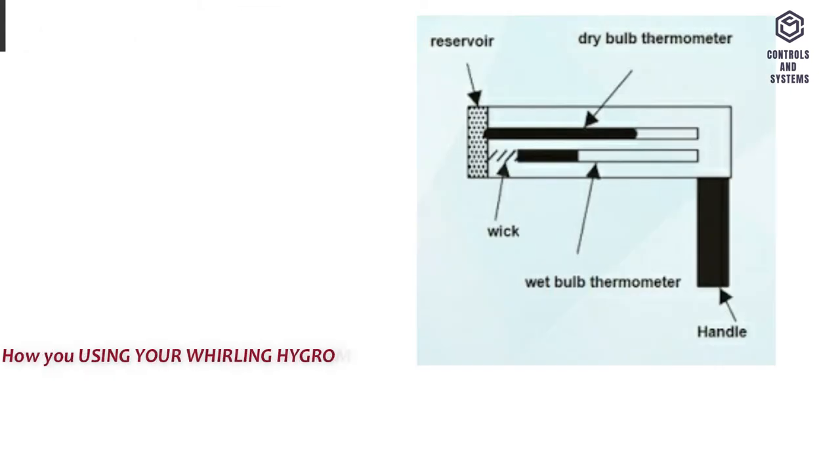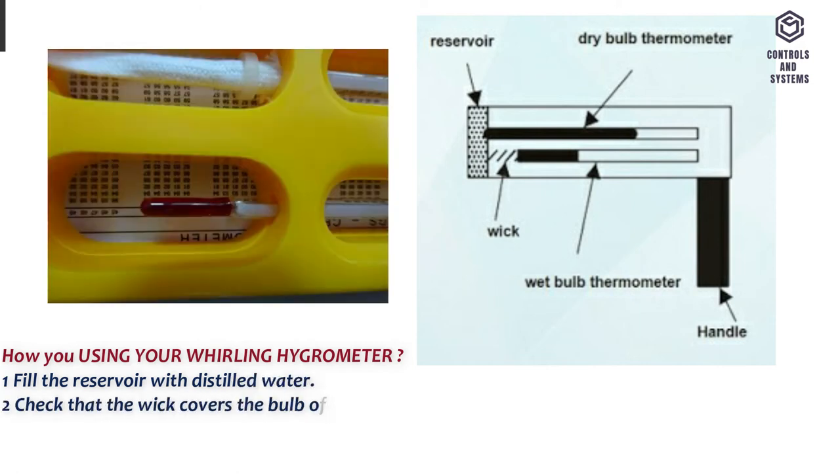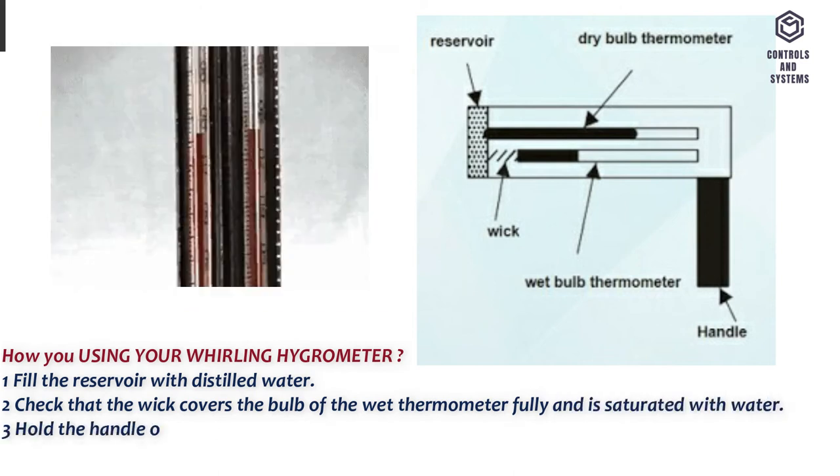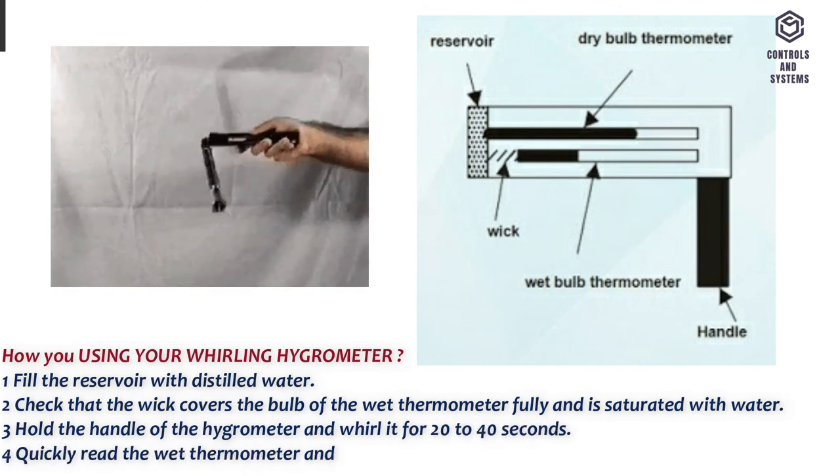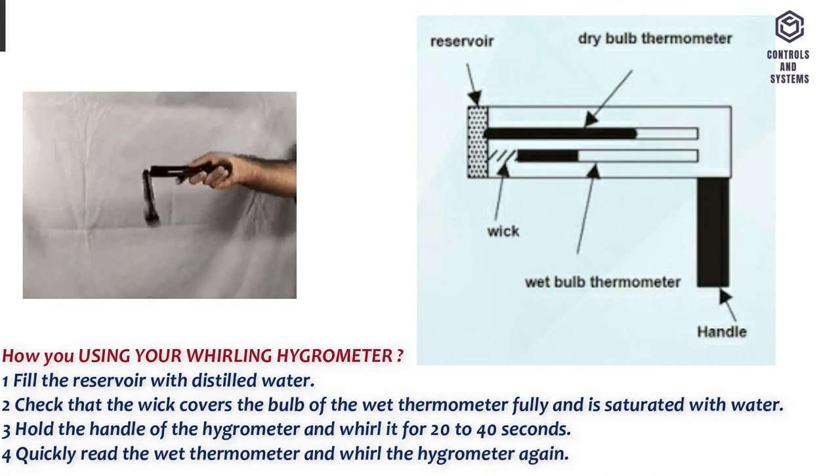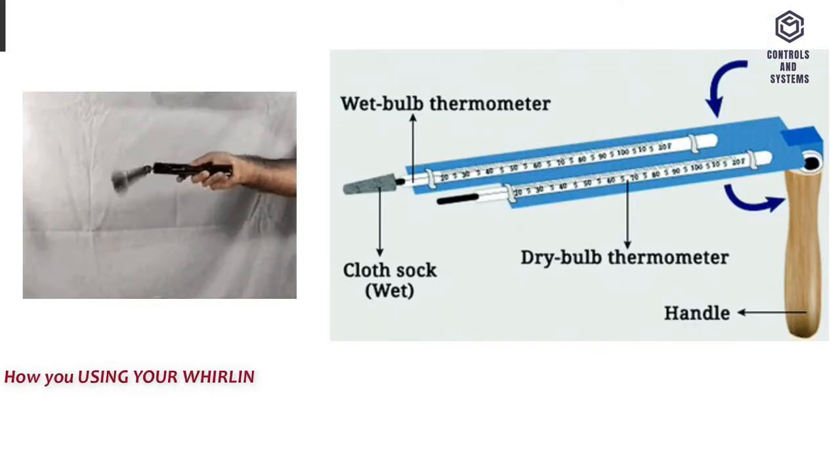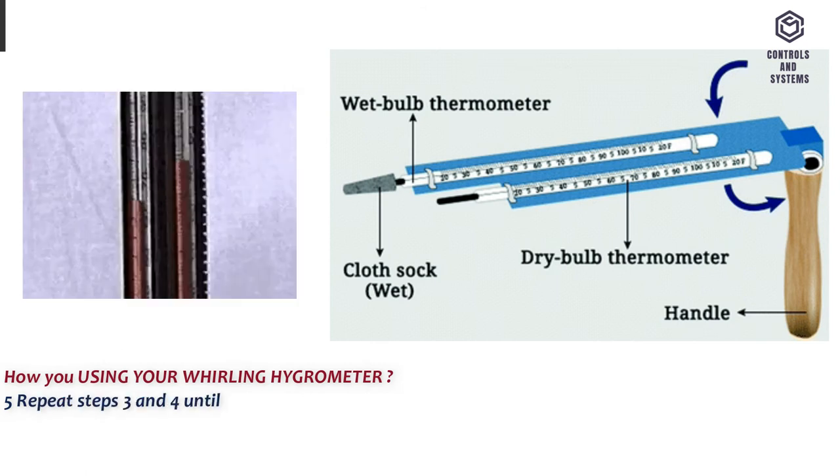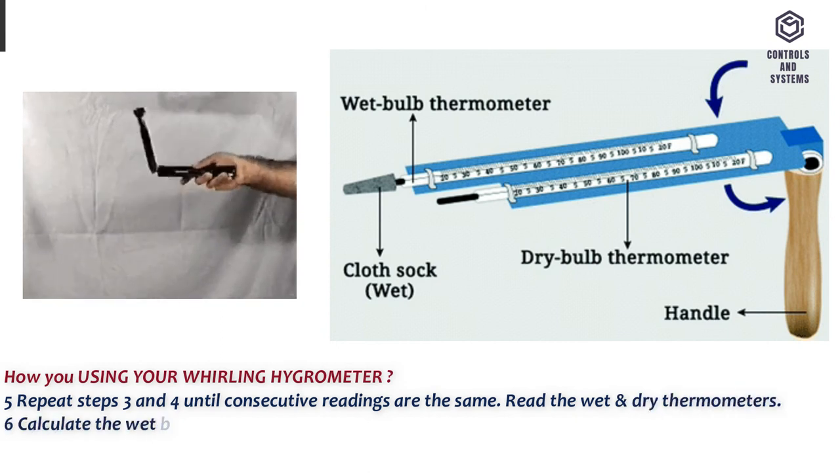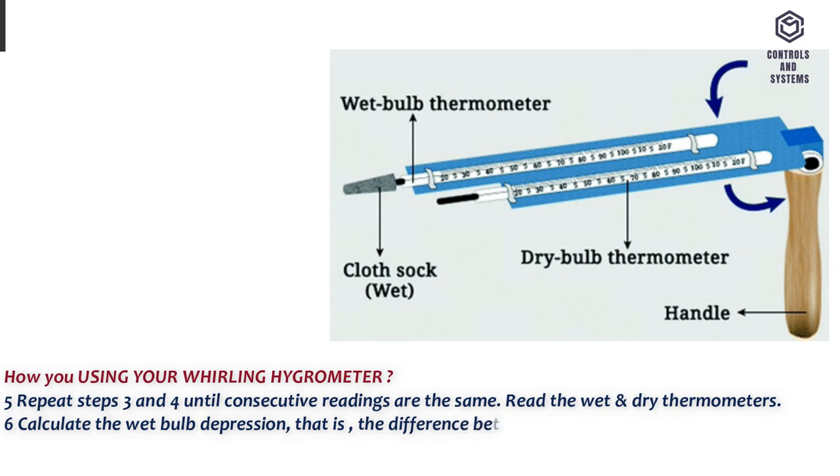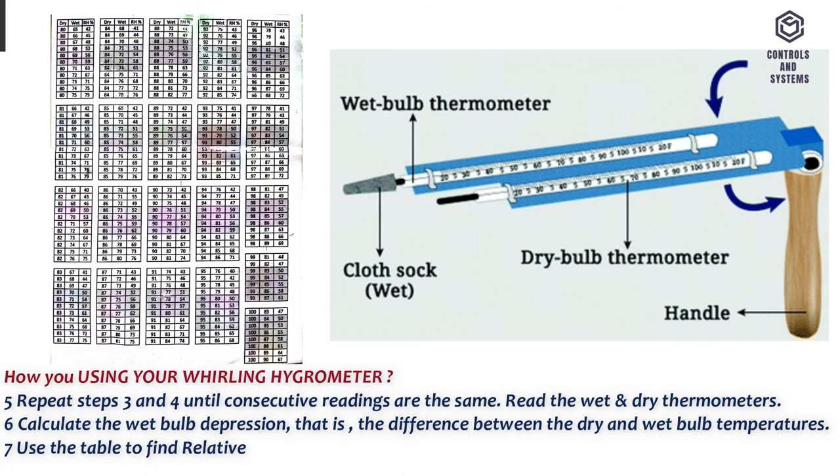How you use your whirling hygrometer. 1. Fill the reservoir with distilled water. 2. Check that the wick covers the bulb of the wet thermometer fully and is saturated with water. 3. Hold the handle of the hygrometer and whirl it for 20 to 40 seconds. 4. Quickly read the wet thermometer and whirl the hygrometer again. 5. Repeat steps 3 and 4 until consecutive readings are the same. Read the wet and dry thermometers. 6. Calculate the wet bulb depression, that is, the difference between the dry and wet bulb temperatures. 7. Use the table to find relative humidity.